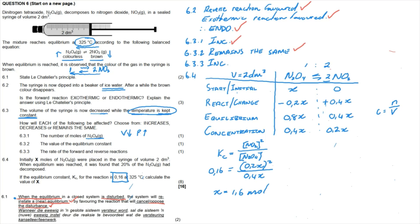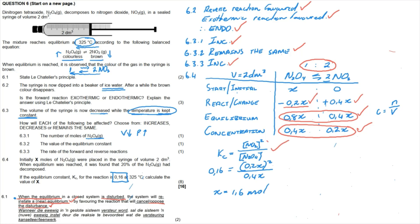Questions 6.3.1, 6.3.2, and 6.3.3 are each one mark for the correct answers: increases, remains the same, and increases. For the RICE table in 6.4: marks are awarded for showing 20% reacts means 0.2x is used; using the molar ratio to find 0.4x of NO₂ is formed; finding equilibrium amounts; converting to equilibrium concentrations; correctly stating the Kc expression; substituting values; and finding the correct final answer.